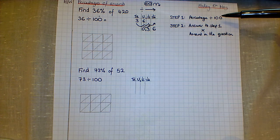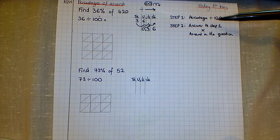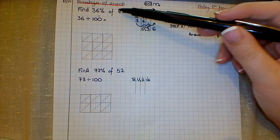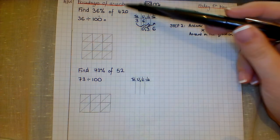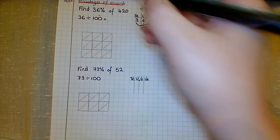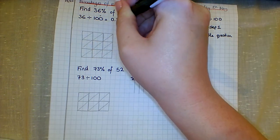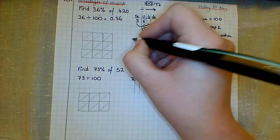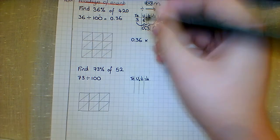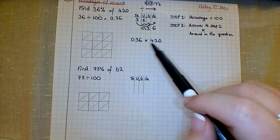Step number two says take your answer to step one and times it by the amount in the question. The amount is just the normal number, not the percentage, so your next sum is 0.36 times 420.